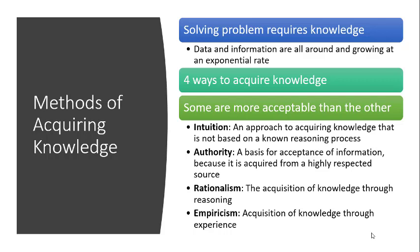The next method is rationalism, in which we acquire knowledge by looking at issues logically — by examining how things fit together using proper logical reasoning. Then we have empiricism, whereby knowledge is acquired through experience or, more or less, observation. So these are the four basic ways of acquiring knowledge.